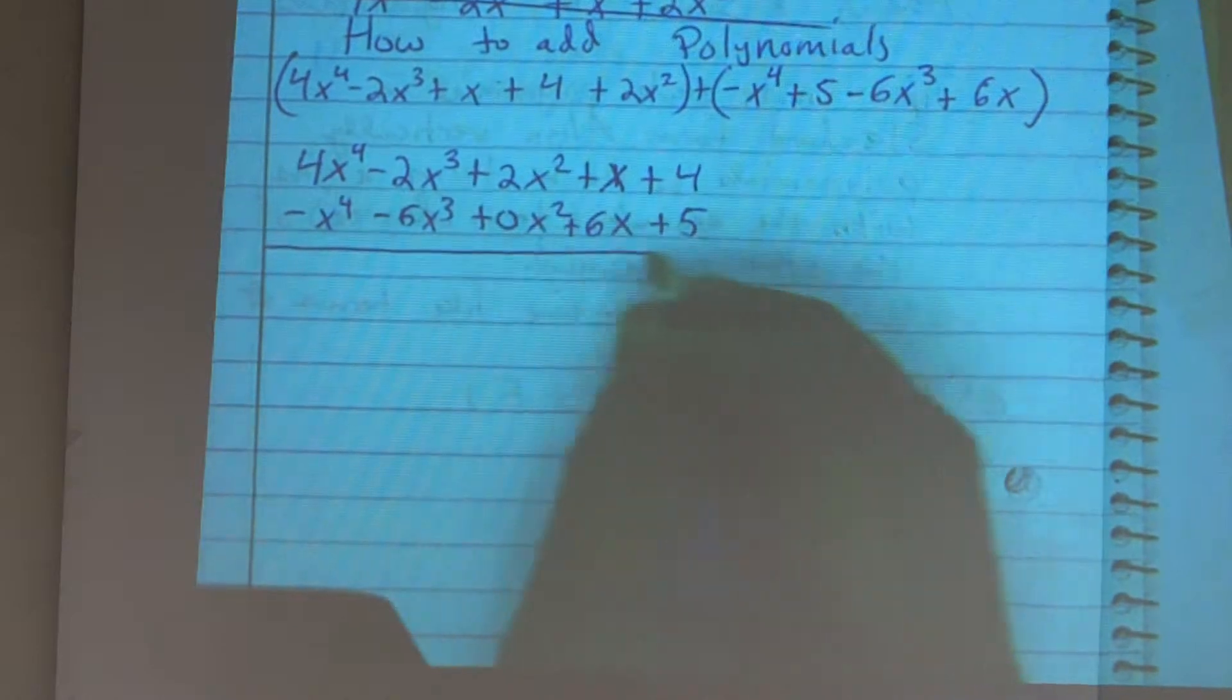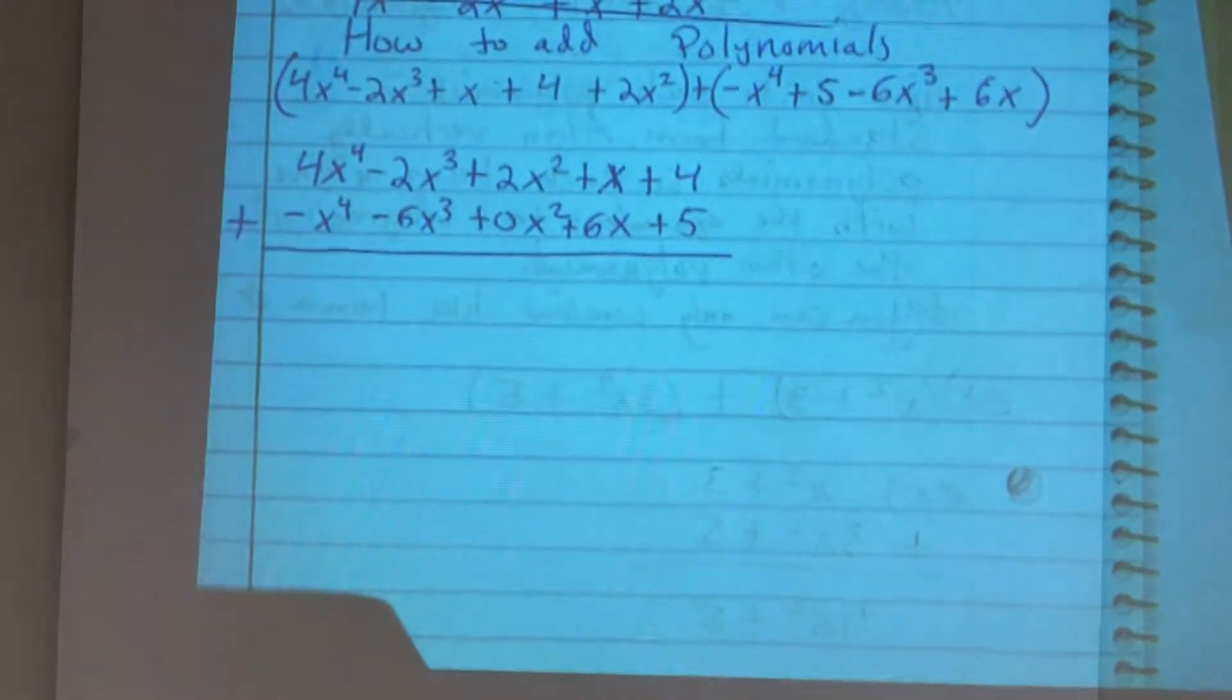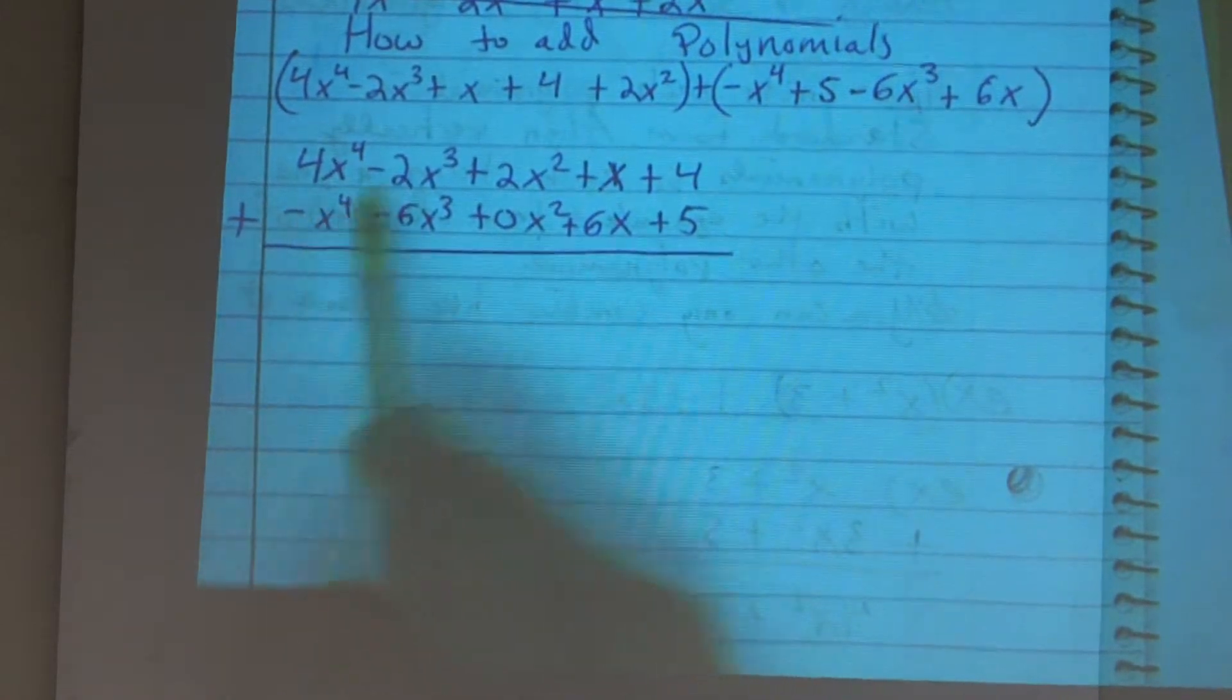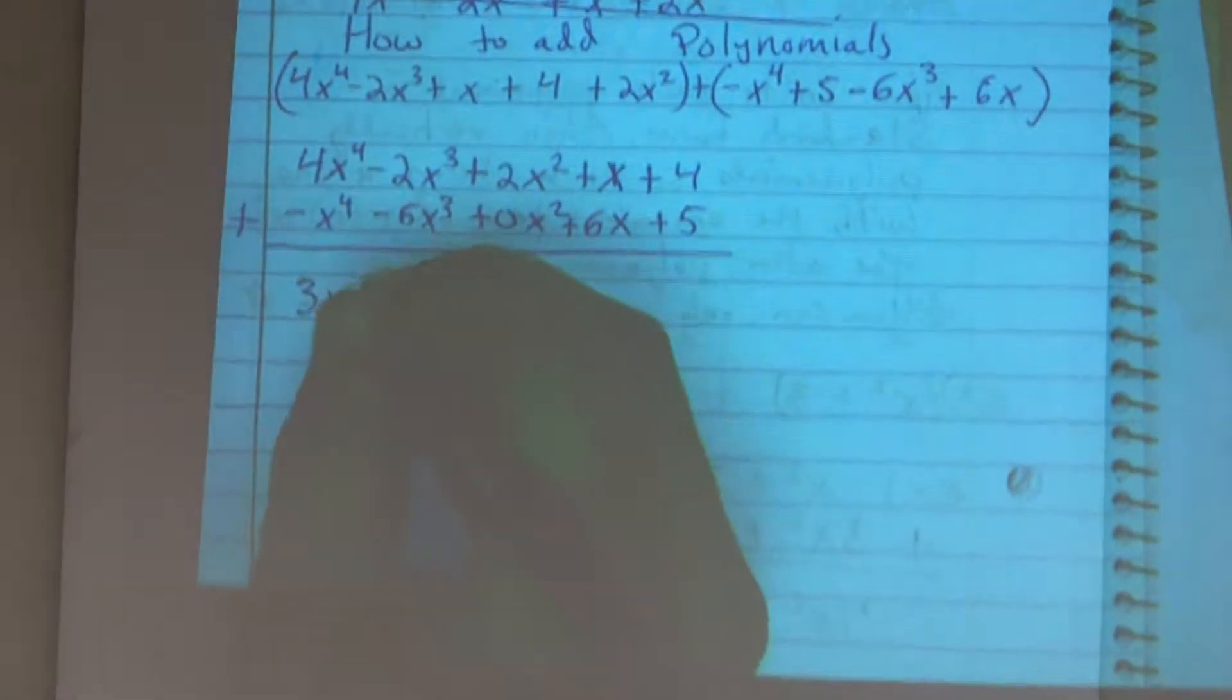So now I'm just going to do a regular addition problem like you guys have worked on before. So 4x to the fourth plus a negative x to the fourth gives me 3x to the fourth.